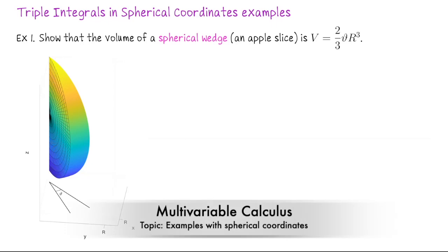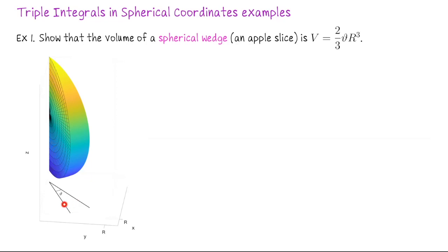In this video we're going to do three examples of integrating with spherical coordinates. For our first example, let's show that the volume of a spherical wedge, kind of like this apple slice shape here, is two-thirds times the angle of our slice — the angle in the x-y plane determining how much of the apple we get — times the radius of the apple cubed. So that radius is this height. This would be tricky in rectangular coordinates but it lends itself well to spherical coordinates.